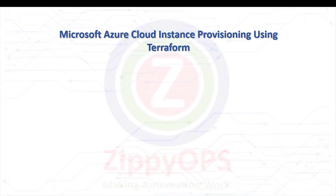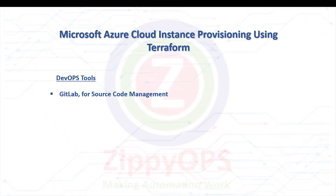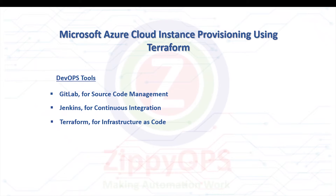Terraform will provision three different operating systems: CentOS, Red Hat-based; Ubuntu, Debian-based; and Windows. The complete process is orchestrated through the Jenkins pipeline. The tools used are: GitLab for source code management, Jenkins for continuous integration, Terraform for infrastructure as code, and Microsoft Azure for public cloud computing platform. Let's explore the workflow of Microsoft Azure Instance Provisioning using Terraform, stage by stage.